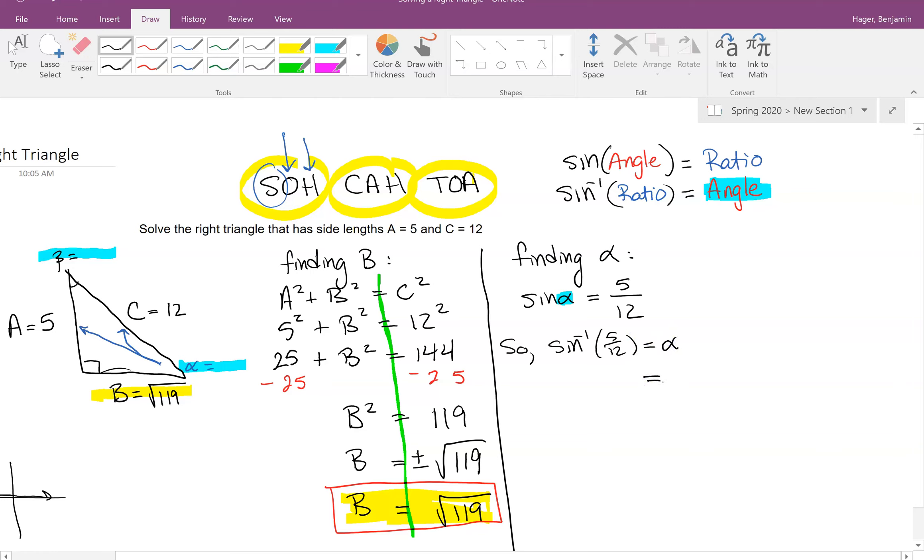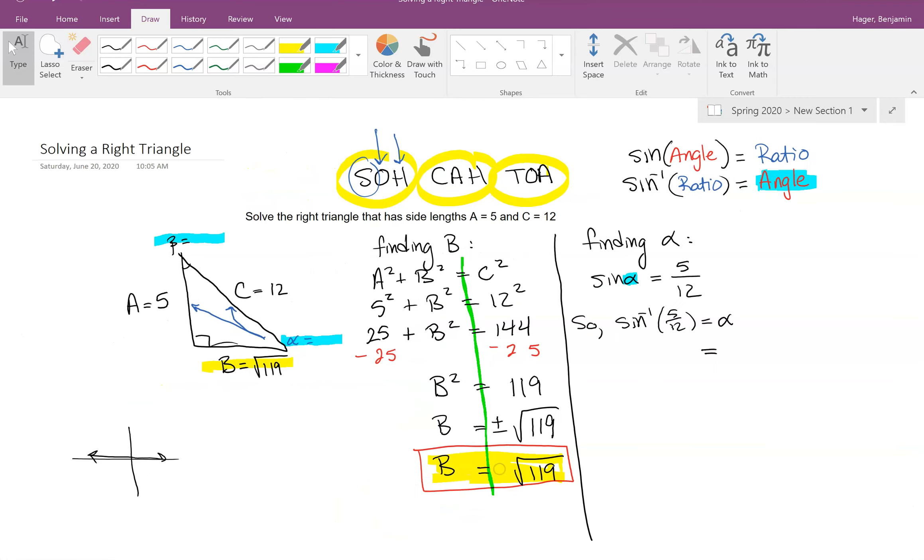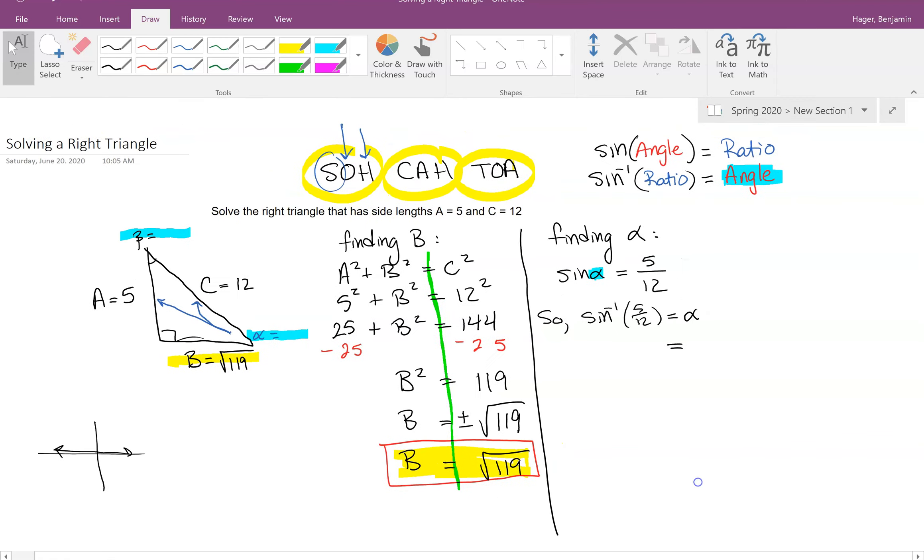And I'm just going to consult the calculator. Now this problem doesn't say whether or not I should list my angles in terms of degrees or radians, so it's entirely up to you. I'm going to work in degrees. Sine inverse of 5/12 is 24.6243. I'm just going to call it about 24.6 degrees. We'll just go to one decimal place. Okay, there's my first angle alpha.